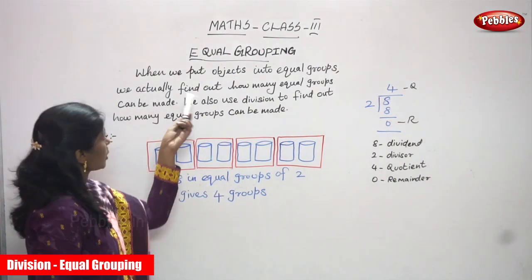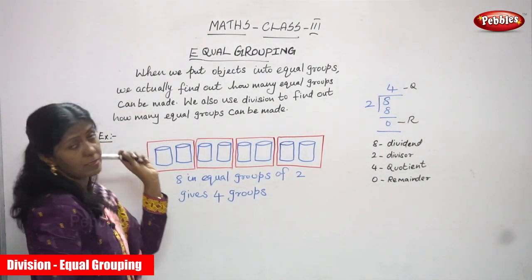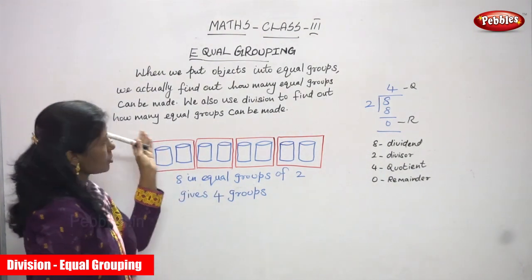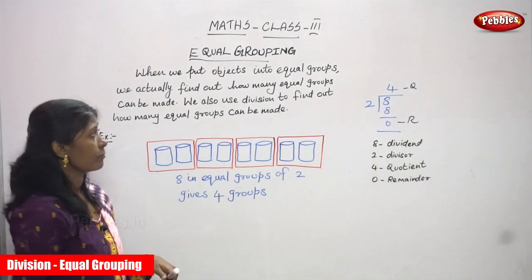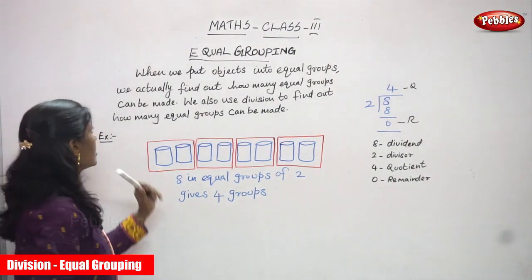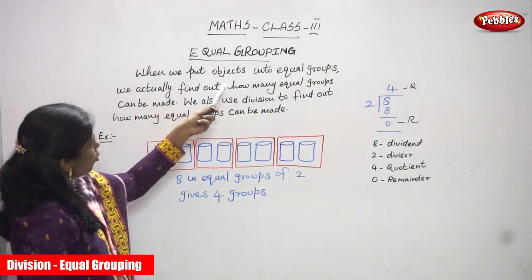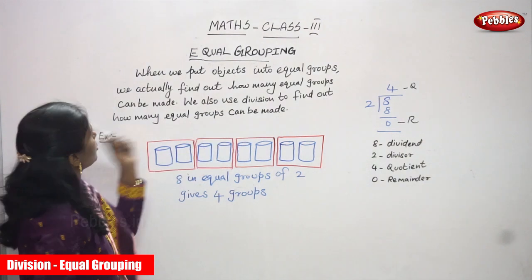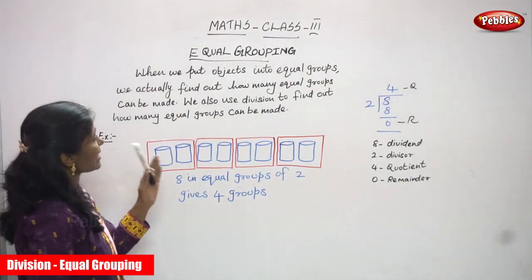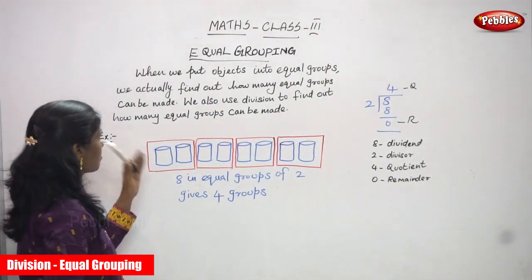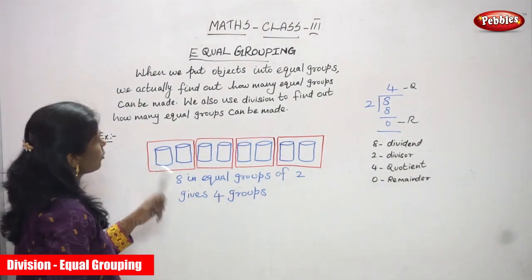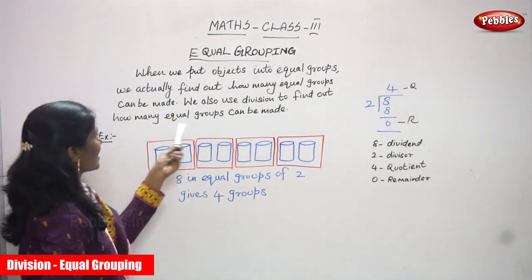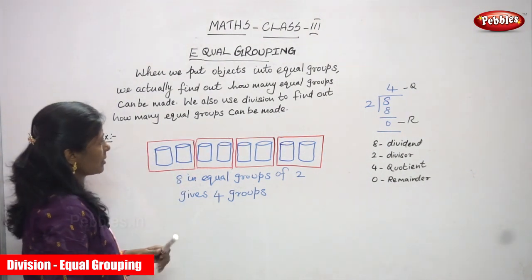Now we are going to see equal grouping. It is a second heading and it also comes under division. First we have seen equal sharing. When we put objects into equal groups, we find out how many equal groups can be made. We use division to find out how many equal groups can be made.